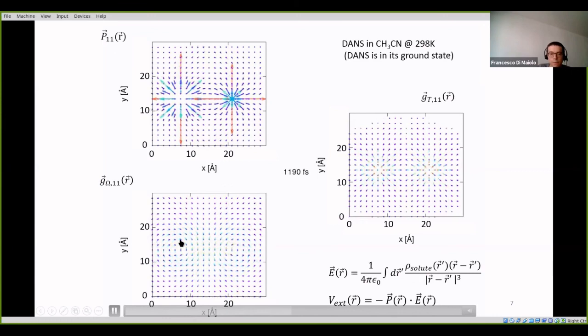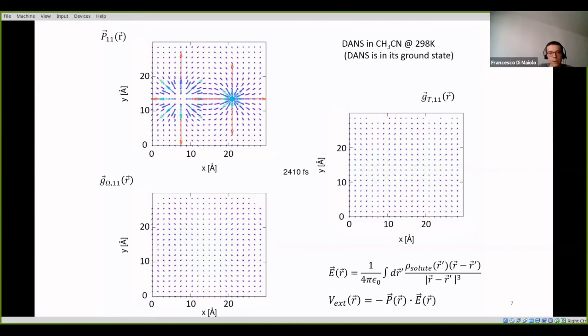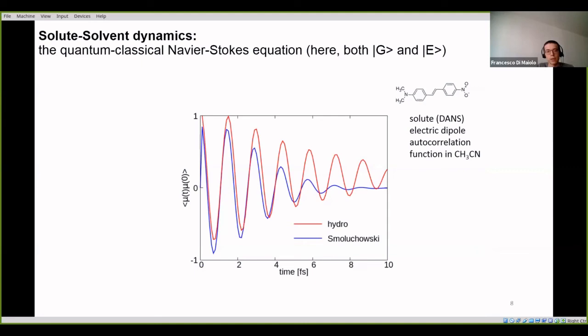Then, the fluxes of the vortexes and the velocities are damping. And we nicely reach the thermal equilibrium. So, once we are in the thermal equilibrium between the solvent and the charge distribution of the ground state of the dance chromophore, we can think to excite our system. So, we account for the exciting state. And then, we can follow in time, as we did previously with the Smoluchowski approach, the dipole moment autocorrelation function. And here, I'm showing, again, for dance, this time in acetonitrile, the correlation function calculated with the hydrodynamic approach and with the Smoluchowski approach. And the match is quite nice.